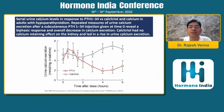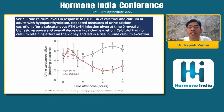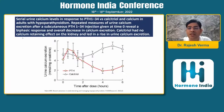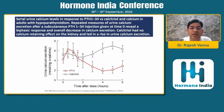This second study shows serial urinary calcium levels in response to PTH 1-34 versus calcitriol and calcium in adults with hypoparathyroidism. Repeated measures of urine calcium excretion after subcutaneous PTH 1-34 injection given at time zero showed a biphasic response and overall decrease in calcium excretion, while calcitriol and calcium increased urinary calcium excretion. The urinary calcium level is shown to gradually decrease with PTH, in contrast to the rise seen with calcitriol.